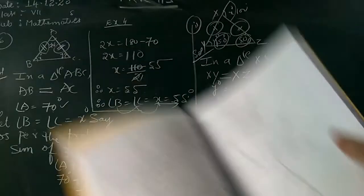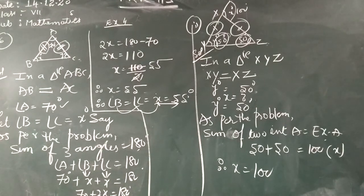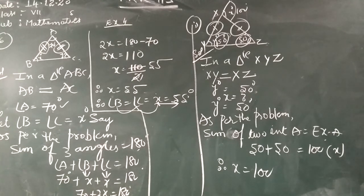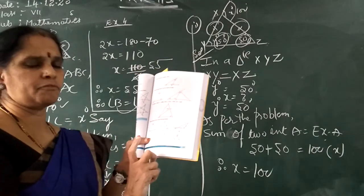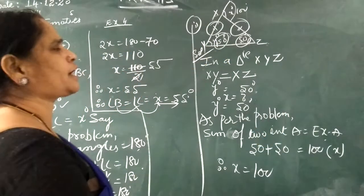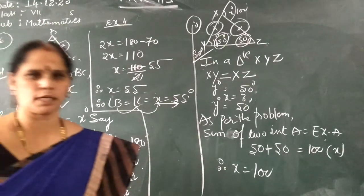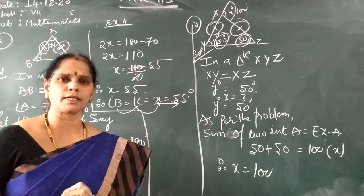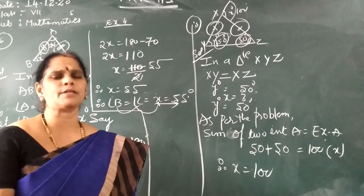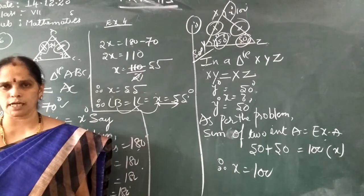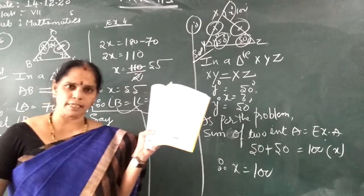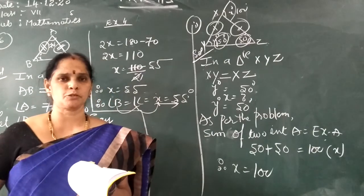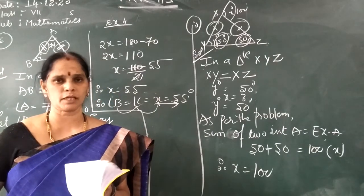In the same way you have to finish all the remaining problems. If not, please ask me in the Zoom class, but don't sit idle. By looking at the pictures you have to understand which property applies — sum of two interior angles equals the exterior angle, or sum of three angles equals 180 degrees. If you can identify the right property, you can do the problems very easily. Don't waste your time. Take your textbook, look at all the problems and try to solve as many as possible. Thank you very much.